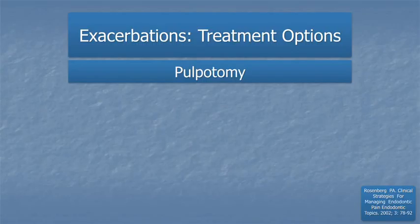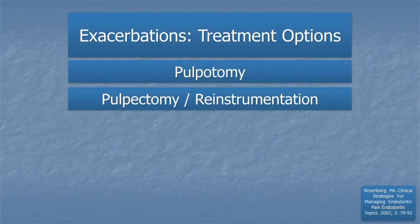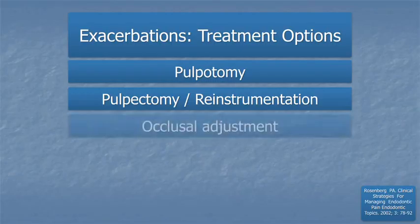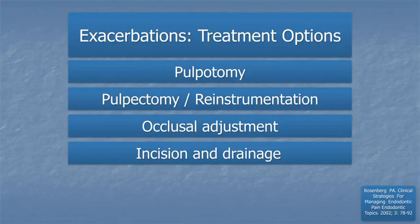Here are our treatment options for exacerbations. A pulpotomy has been shown to be a highly effective procedure in treating a tooth with irreversible pulpitis — by clearing tissue from the pulp chamber, that is often sufficient to provide comfort to patients in pain. Complete instrumentation or re-instrumentation is often a good approach if tissue has been left behind or shredded due to incomplete instrumentation. Occlusal relief should also be provided whenever possible. Incision and drainage is a possibility, but not in vital cases.